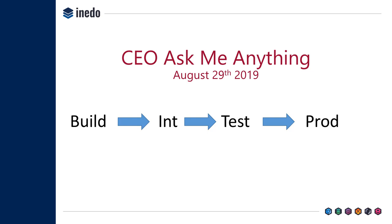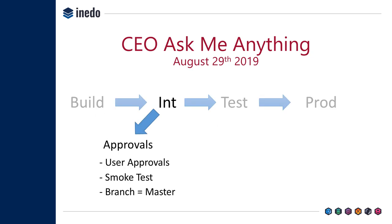This is really where the pipeline differences start coming into play. Taking any given stage — for example, the integration stage — before we go into that stage, we have things we call approvals. Approvals look at things like: did a user check something off? Did a certain number of people in a group sign off and say this is good? This could be like a smoke test pass, or two developers or two security engineers signing off. We also have automatic approvals — for example, does a variable like branch equal master. Some of these are manual approvals, some are automatic approvals.